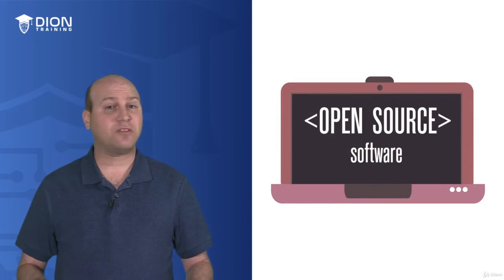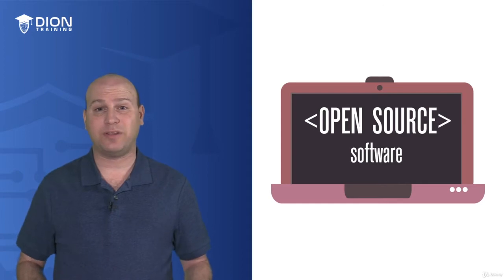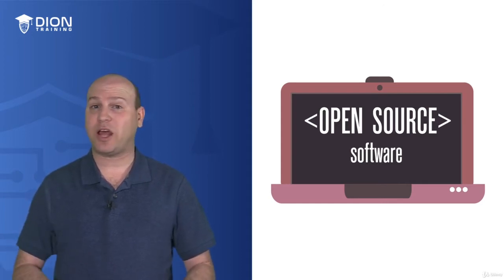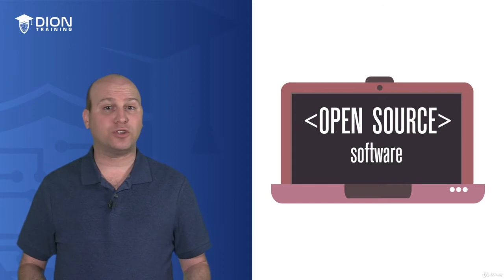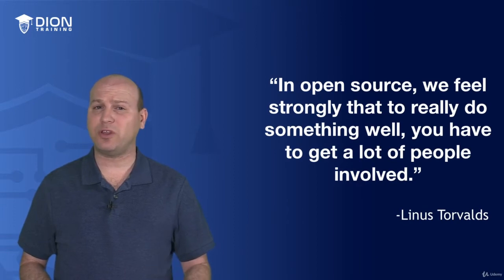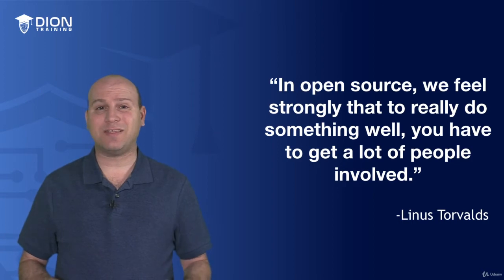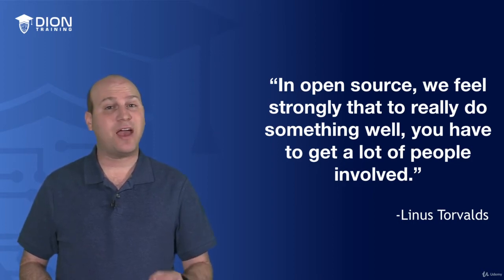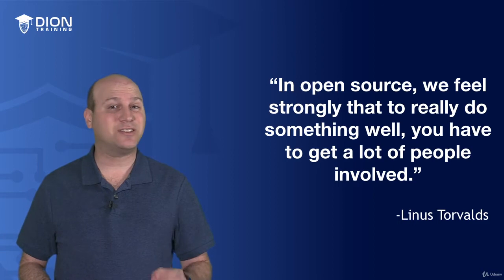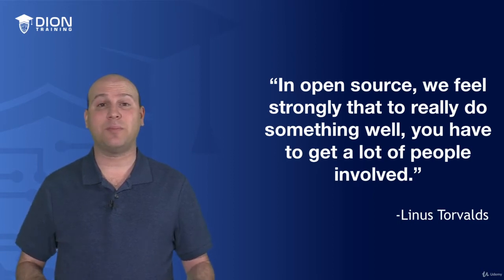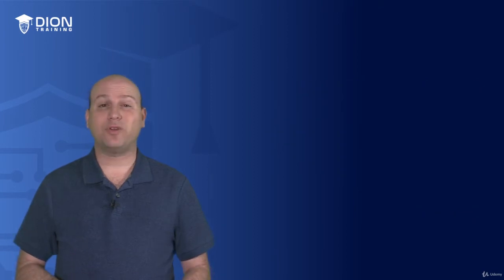What makes Linux so unique and so different is its open source nature. This means that anyone can access and read the entire source code for the entire Linux operating system, but it also means that they can change it however they like and make their own versions called distributions. Linus once said, "In open source, we feel strongly that to really do something well, you have to get a lot of people involved." It's estimated that over 16,000 developers from more than 1,400 companies have contributed to the Linux kernel since 2005, and all of them did it as a labor of love, not for a paycheck. It is really an unusual and a beautiful thing that has come out of the creation of Linux.